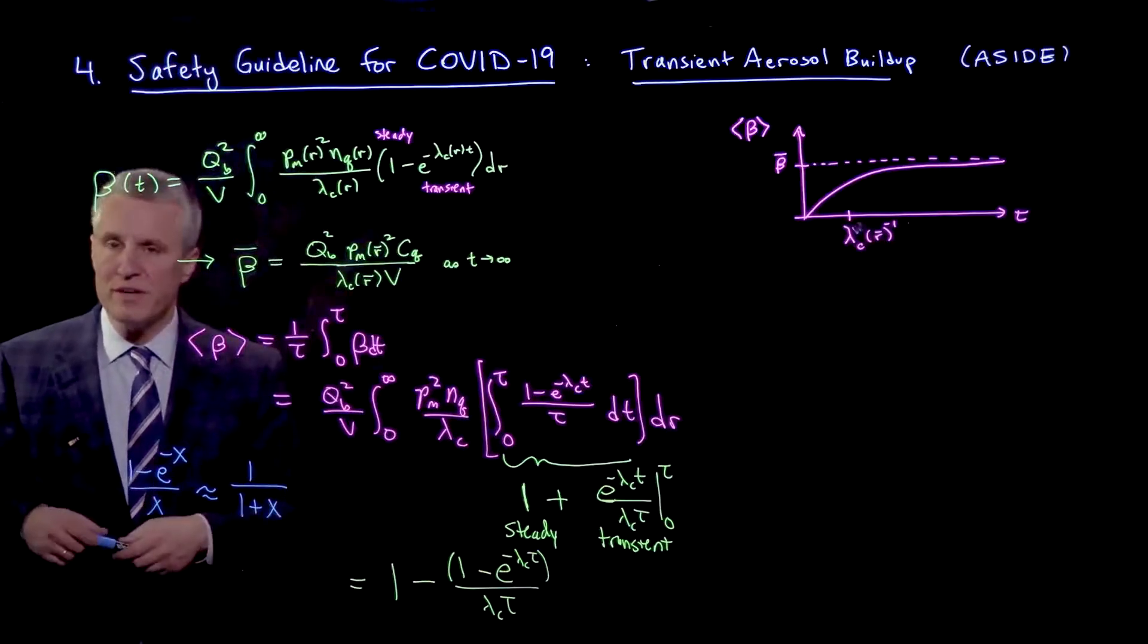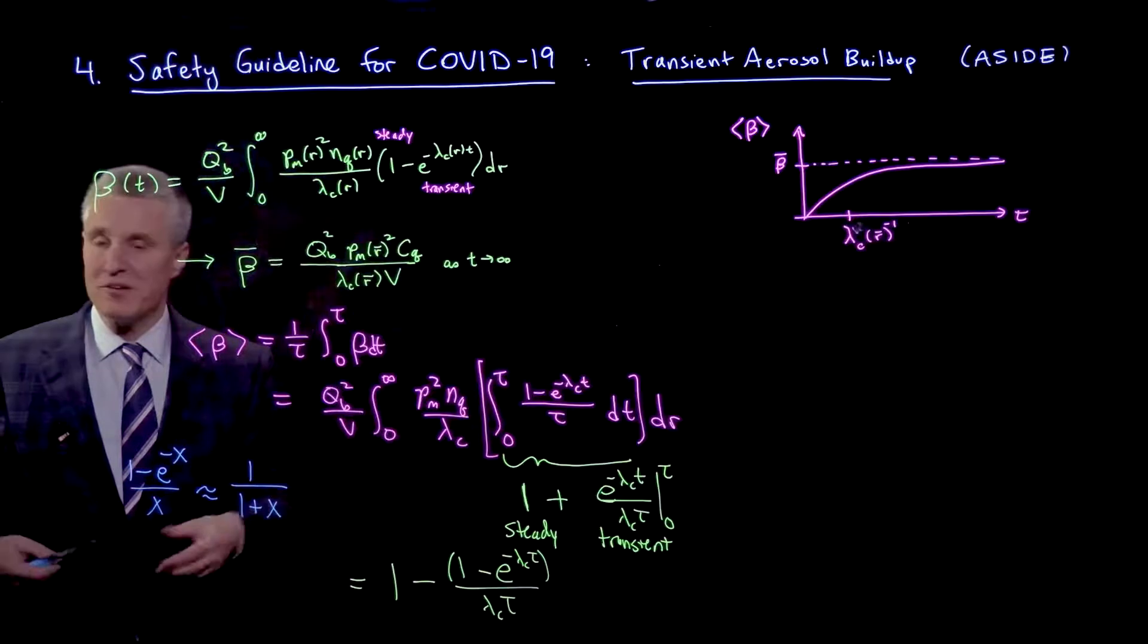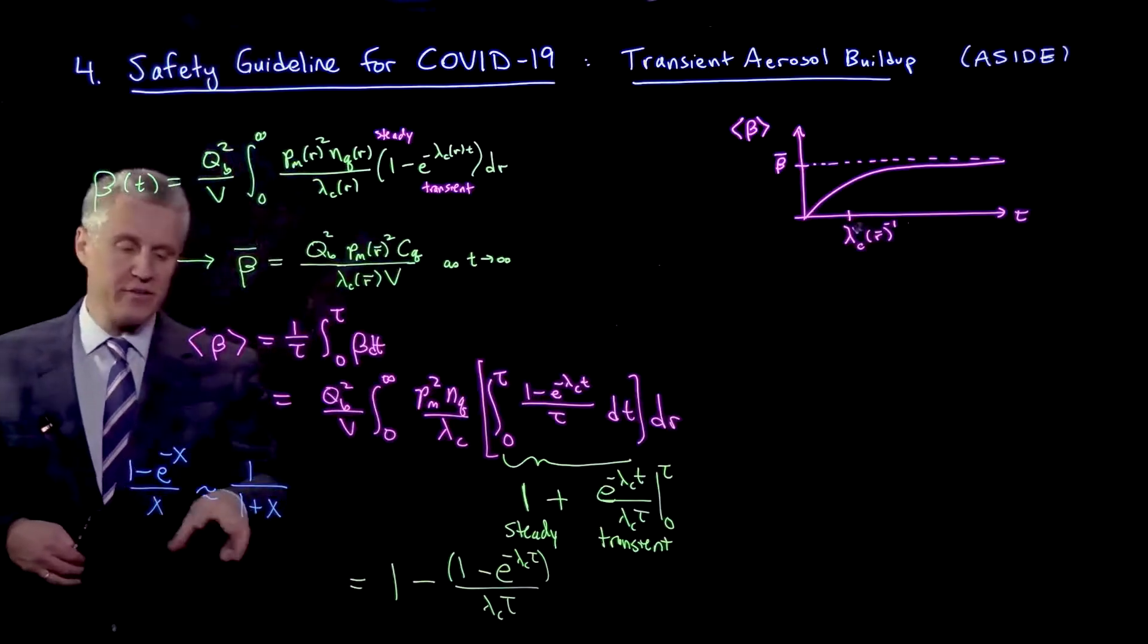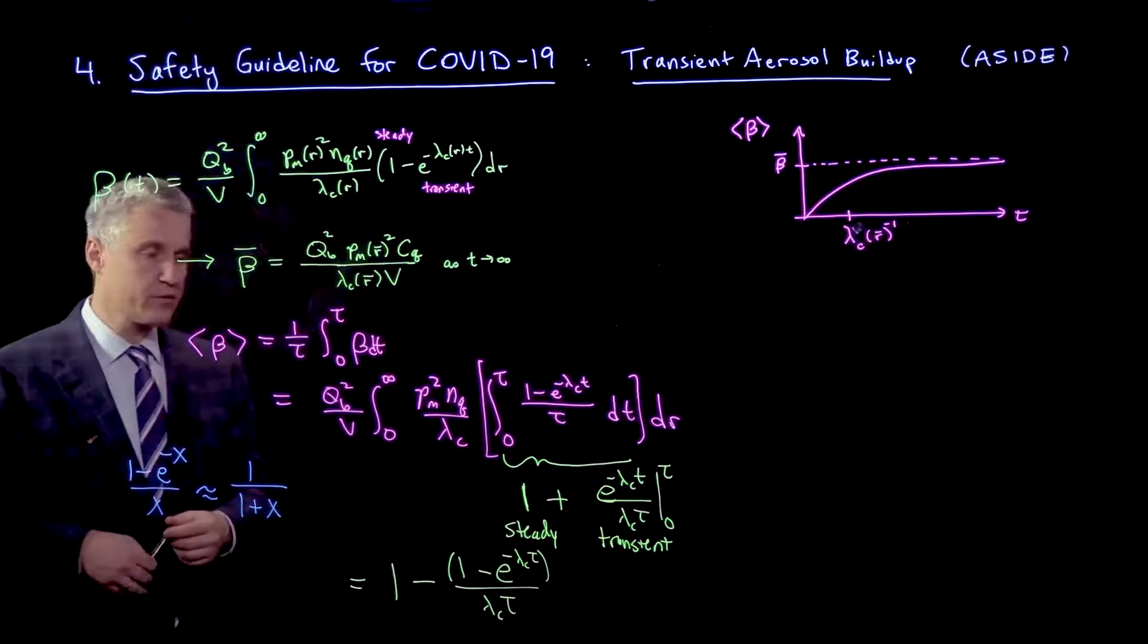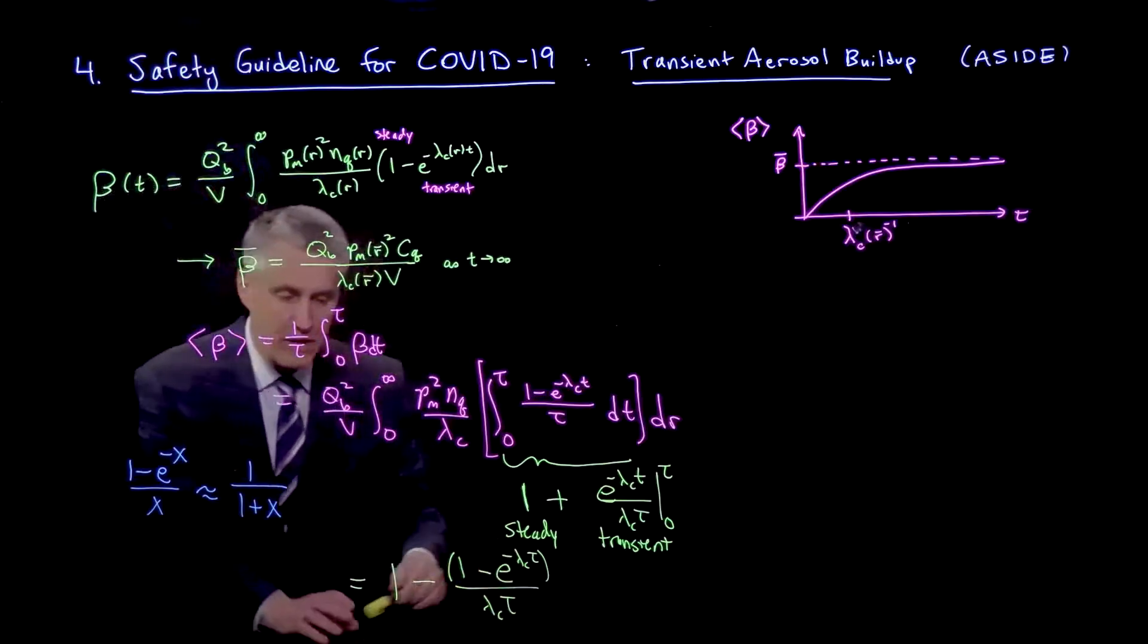And given that everything we're doing in this calculation, when applied to a real situation, is going to be off by some uncertainty, which could be a factor of 2 or 3, this is actually going to be more than good enough of an approximation for us. So if I make that approximation.